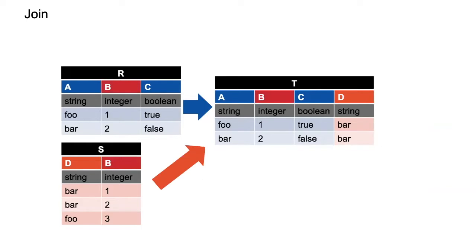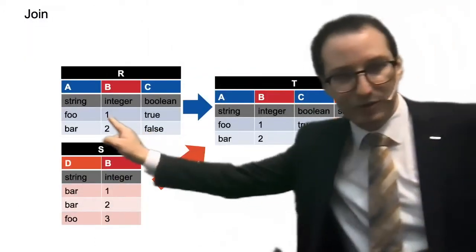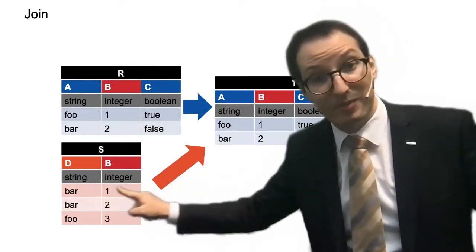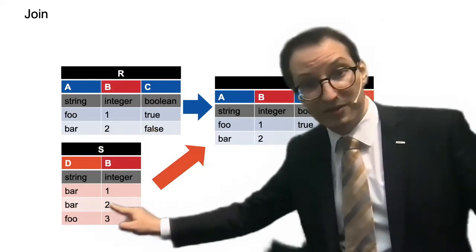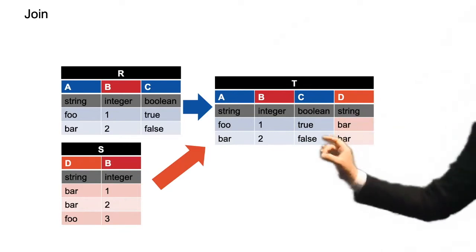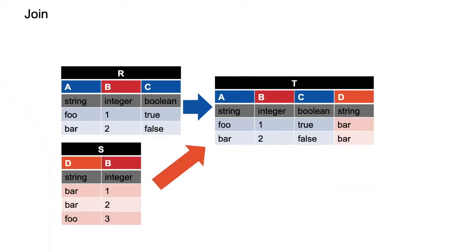Instead of the Cartesian product, we typically add a selection — and that is what we call a join. We only keep combinations of tuples that have the same value for column B. So this tuple is matched with that tuple, and you only get two results. Joins are extremely powerful but are still very expensive compared to selection and projection. Selection and projection can be done in linear time. Joins — technically you could argue linear time with hash maps, but at large scale you still need to shuffle things around. Just remember: a join feels expensive.